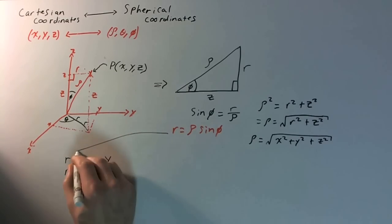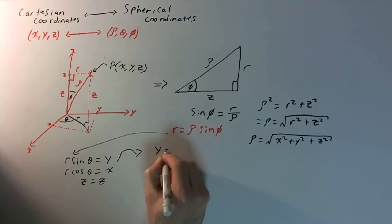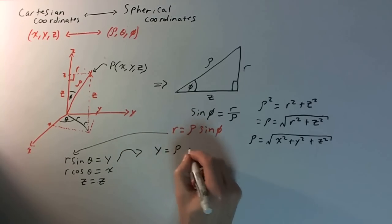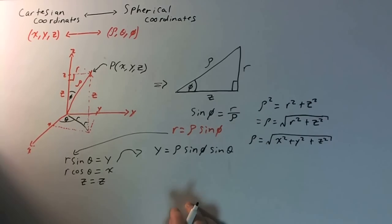So, now we have, we plug this in here, and then we ultimately get y is going to be equal to r, which is just rho sine phi, then sine theta.